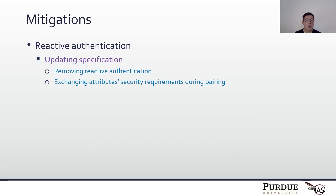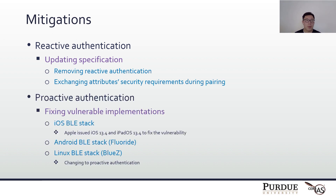Different approaches can be adopted to defend against BLISA. For reactive authentication, the specification needs to be updated by either removing reactive authentication or adding more approaches to enhance it. For proactive authentication, implementations need to strictly follow the specification. Specifically for the Linux BLE stack, it can be changed from reactive authentication to proactive authentication.